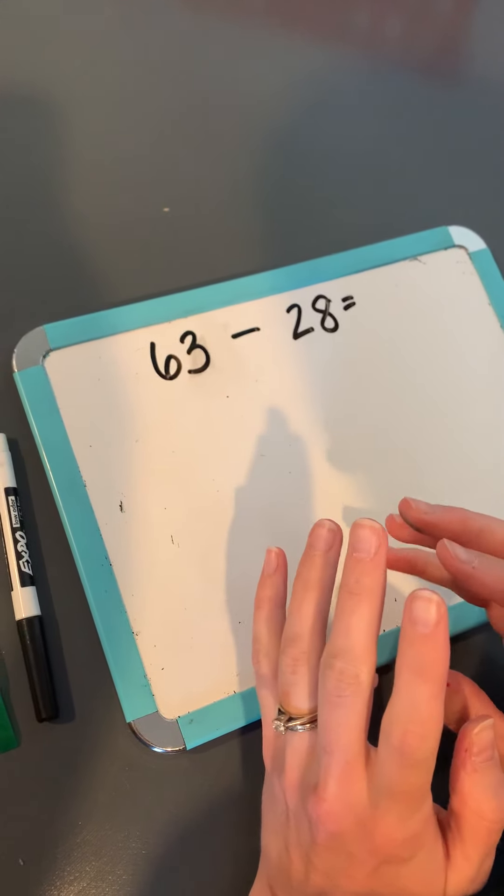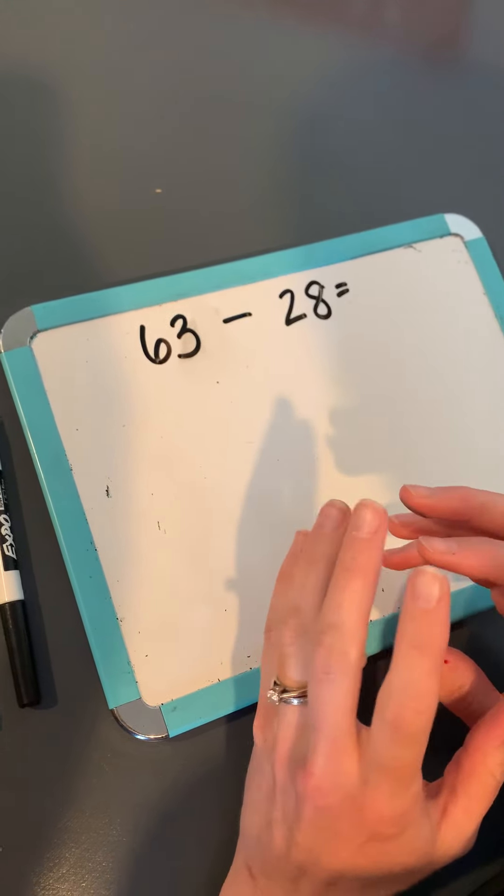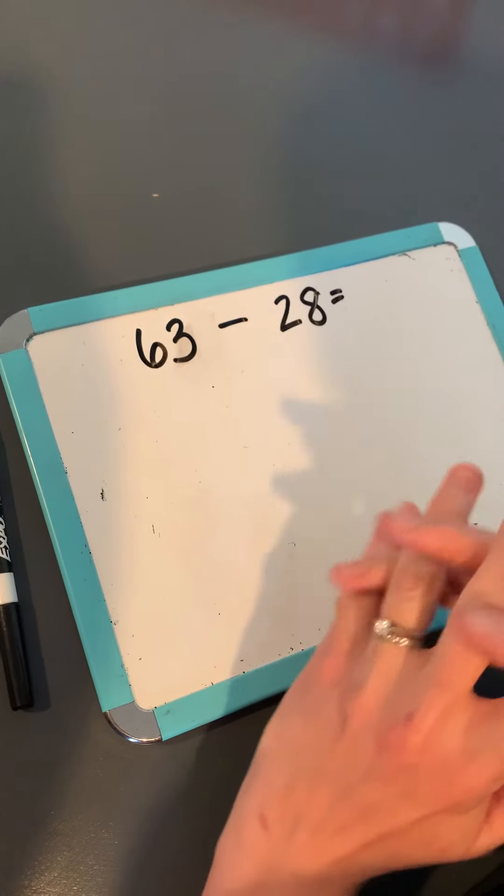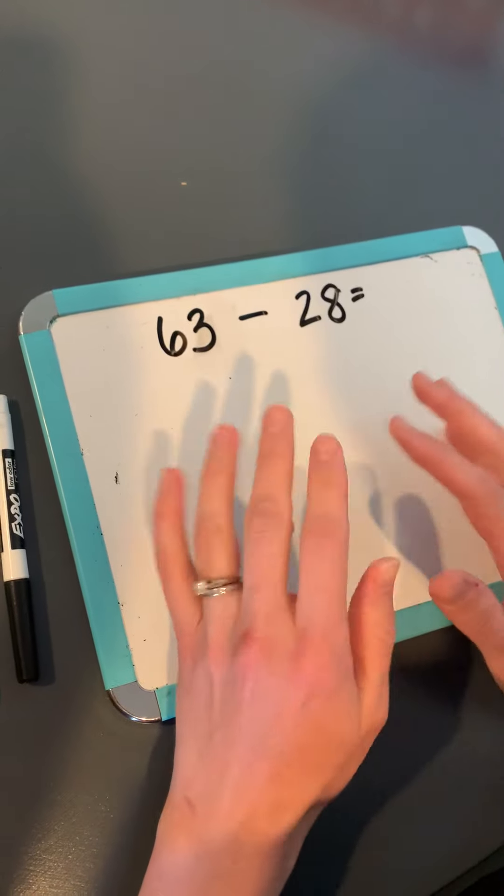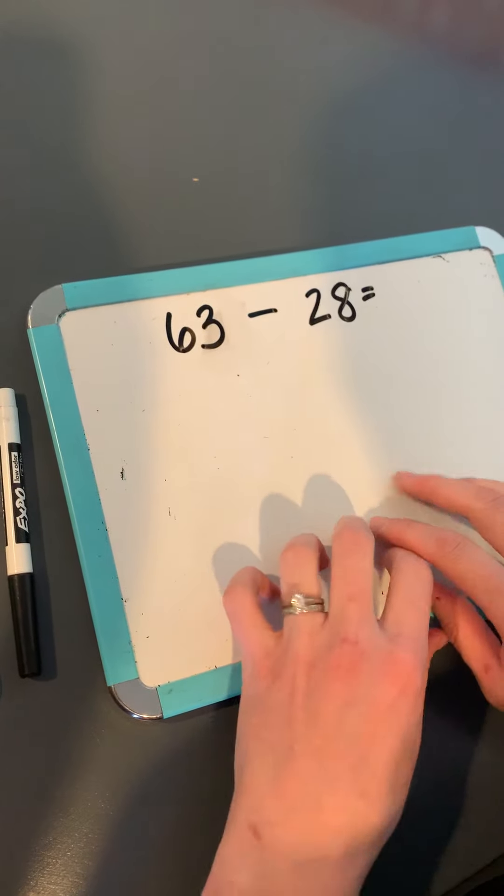Last week I talked to you about using the base 10 blocks for questions that didn't require any regrouping. So this week we're going to do the same technique but we're going to work on some regrouping questions. So I'm going to do it first with the base 10 blocks and then we're going to do it as a picture which is how you'll do it at home.